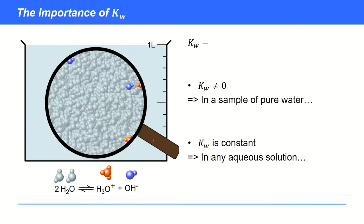Why is this significant? If we rewrite the expression, Kw is the concentration of H plus times the concentration of OH minus. Two important things here. This Kw value is not zero, so that tells us that in a sample of pure water there are some H plus and OH minus ions.